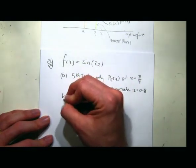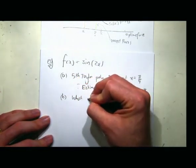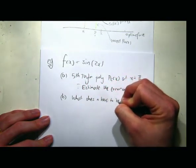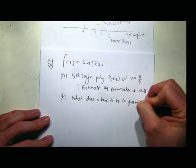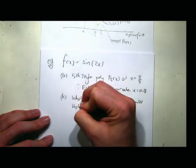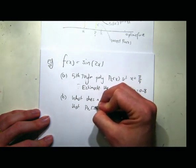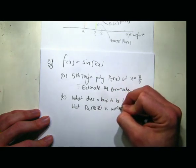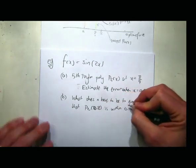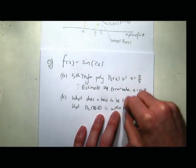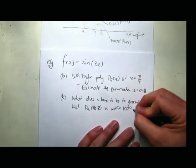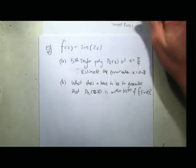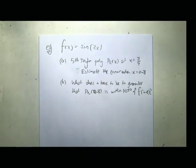Here's how we're going to do it. Part B will be: what does N have to be to guarantee that Pn(0.8) is within 10^(−20) of f(0.8)? I've chosen a really big number because of what's going to happen when I do this first part of the problem.